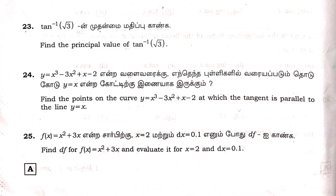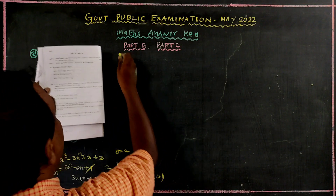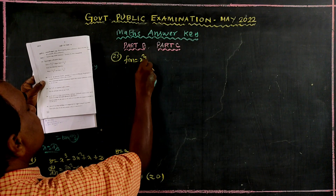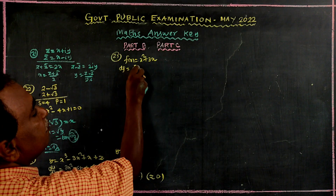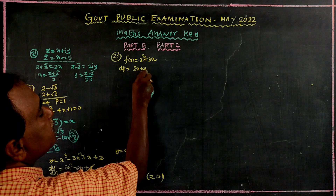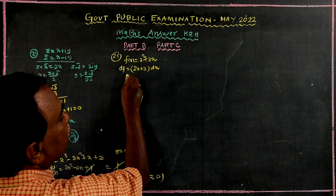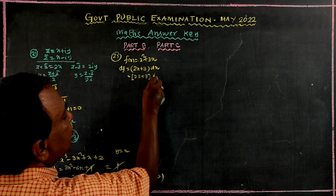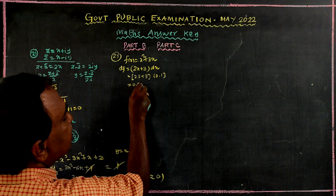Problem number 25: f of x is equal to x squared plus 3x. The differential is df equal to 2x plus 3 times dx. With x equal to 2 and dx equal to 0.1: df equals 2 times 2 plus 3, times 0.1, which gives 7 times 0.1 equal to 0.7. That's the answer.